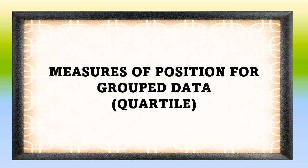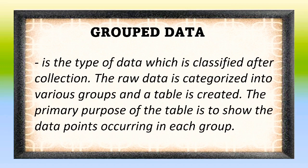At this moment, I'm going to discuss measures of position for grouped data, and that is quartiles. Let us first define what grouped data is. When we say grouped data, it is a type of data which is classified after collection. The raw data is categorized into various groups, and a table is created. The primary purpose of the table is to show the data points occurring in each group.